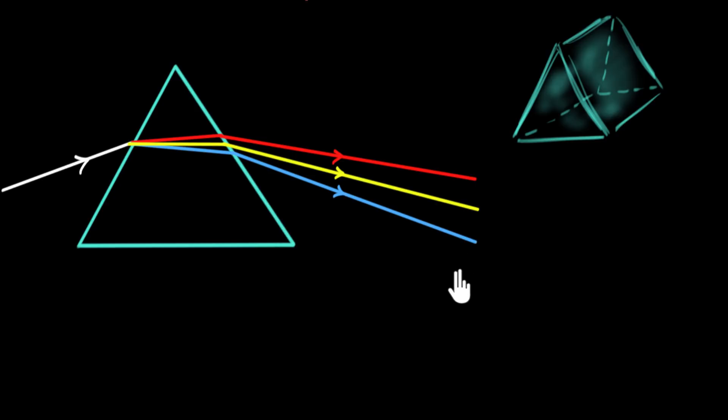So that made him a little suspicious about this theory. Why is it that the prism is only creating more colors out of white light? Why is it not creating more colors out of these other colors? But this doesn't completely disprove our theory, right? Maybe white light is special. Maybe only when you shine white light on the prism, it starts creating these colors. That's still possible, right?